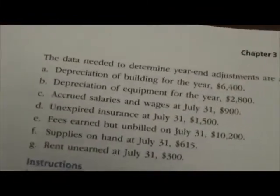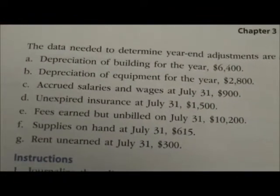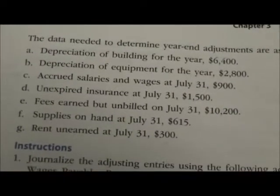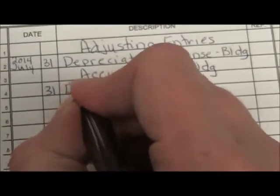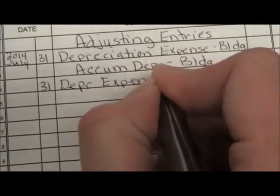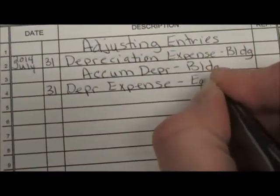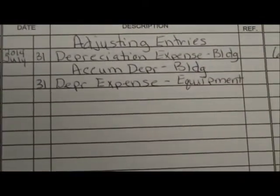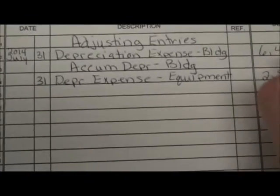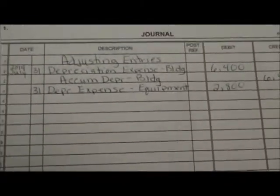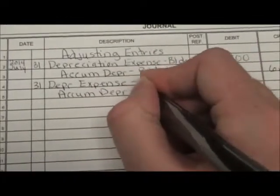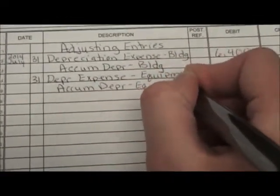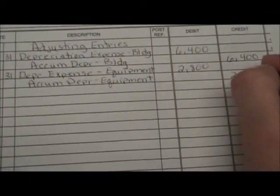The next one in our textbook, letter B, tells us that the depreciation of the equipment for the year was $2,800. We're going to do pretty much the same thing. The date is the 31st. Depreciation Expense Equipment for $2,800, and Accumulated Depreciation Equipment is your credit for $2,800.